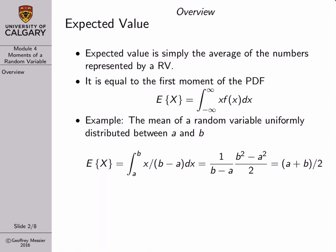It's important to note that there are always two different ways to calculate the mean or expected value of a random variable. One is to do it experimentally: if you have access to the experimental data, you just take the string of random numbers and plug it into Excel or MATLAB, add them up, and divide by the total number. However, when you don't have access to the experimental data but do have access to the PDF, there's a different way — that's to take the first moment of the PDF.